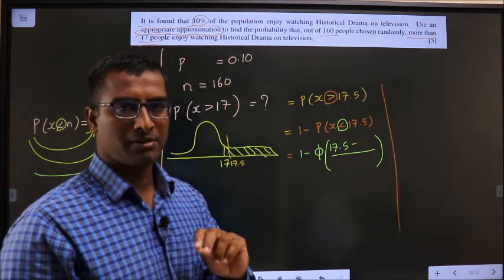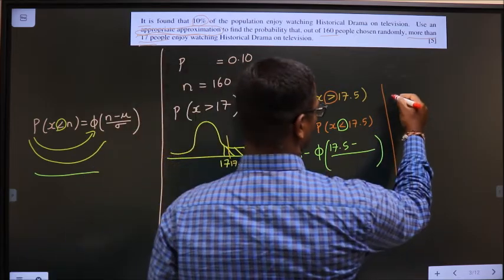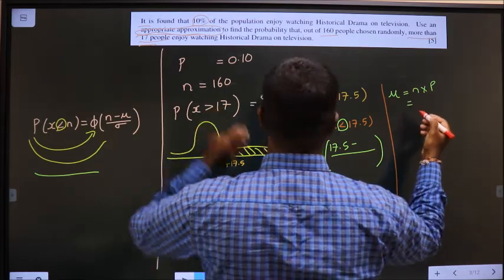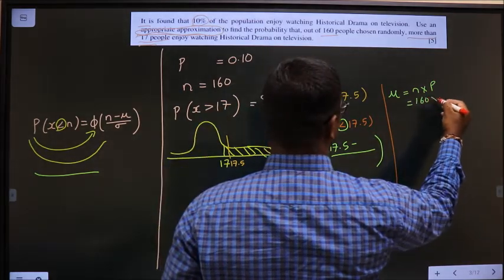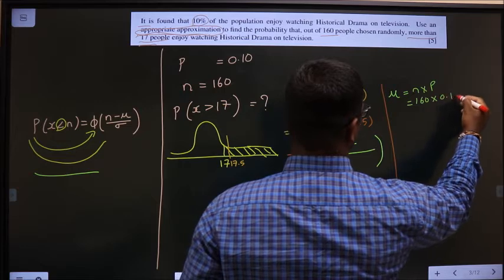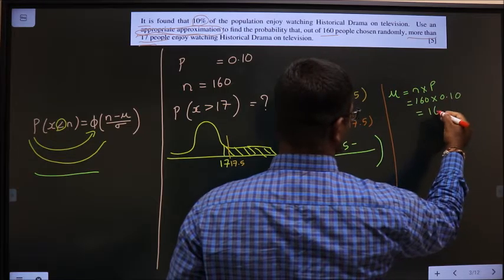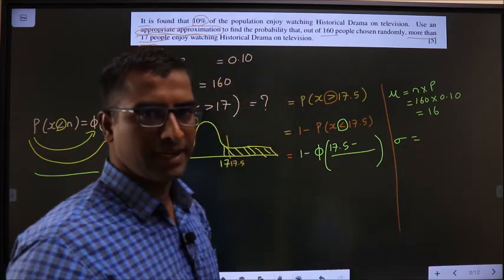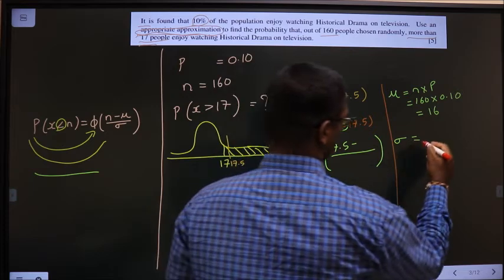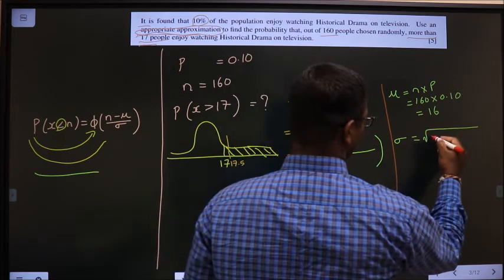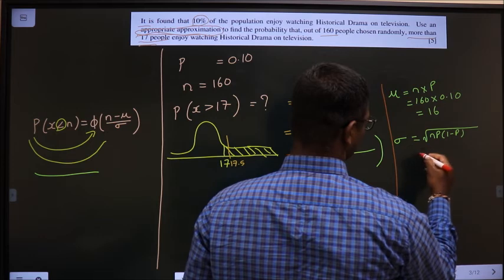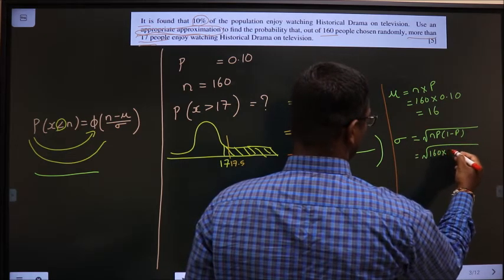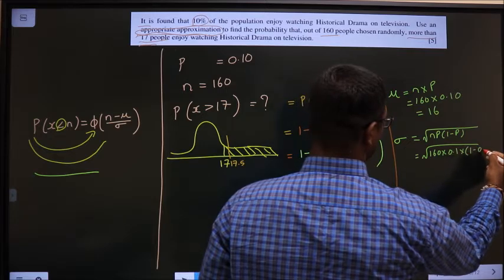So formula for calculating mean is N into P. So N is 160 and P is 0.10. So this is 16. And formula for calculating standard deviation is square root of N P into 1 minus P. So that is N is 160 into 0.1 into 1 minus 0.1.